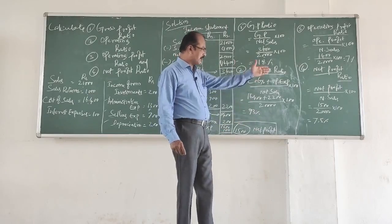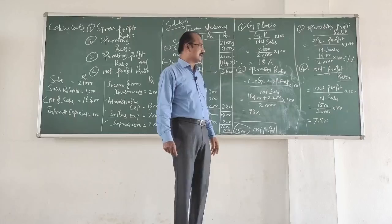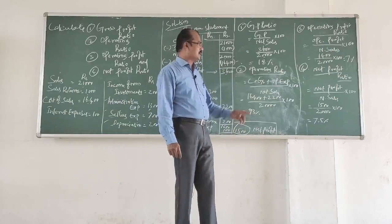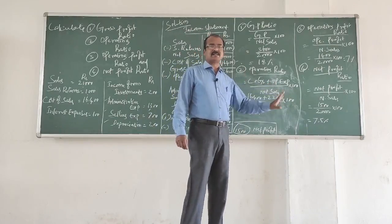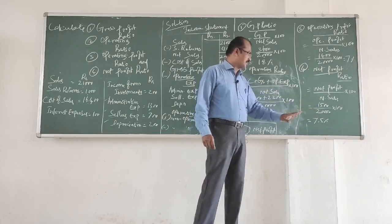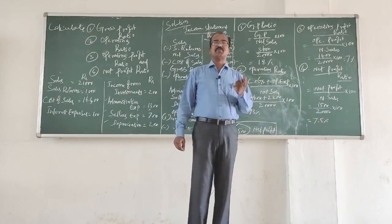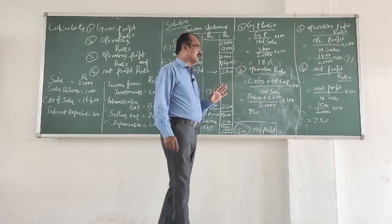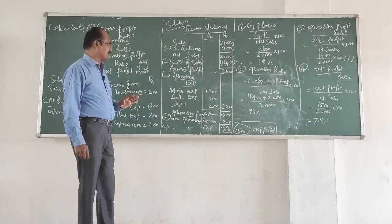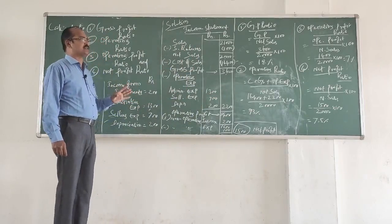The fourth ratio is net profit ratio. The formula is: net profit divided by net sales, multiplied by 100. Net profit is 1,500, divided by net sales of 20,000, multiplied by 100 — this gives us 7.5%. This is an important problem which could be frequently asked in examinations.